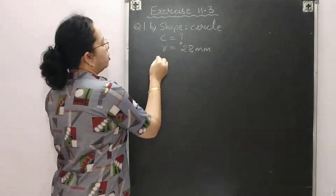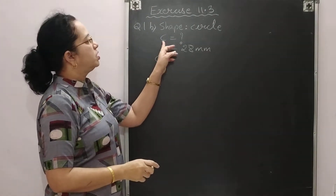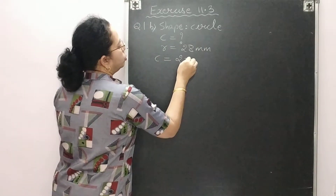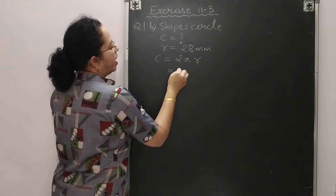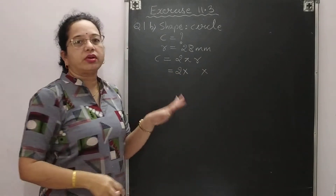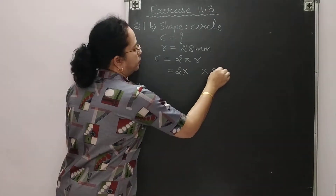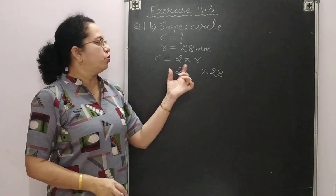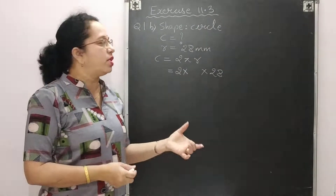The first thing we always write down is the formula. The formula for the circumference of a circle is C = 2πr. Substitute the values — the value of pi is 22/7, as already given in the question.